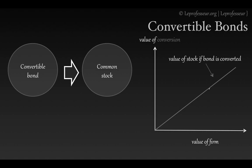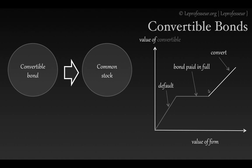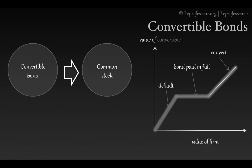If you convert all your convertible bonds to common stocks, your investment value will rise as the value of the firm rises. Combining these two graphs, up to the conversion point the value is constant like a bond, but after conversion the value starts rising like a stock.